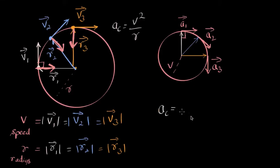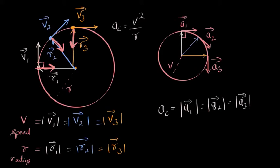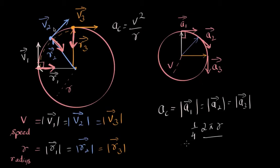Now for centripetal acceleration, we take the magnitude of a1, a2, or a3 — they are all equal. Looking at the original circle: the time period for one quarter of the circle is the distance (which is one-quarter of the circumference, 2πr divided by 4) divided by the velocity v. So the time period equals (1/4 × 2πr) divided by v. Because the radius is R, the whole circumference is 2πr, so the distance for one quarter is 2πr/4.